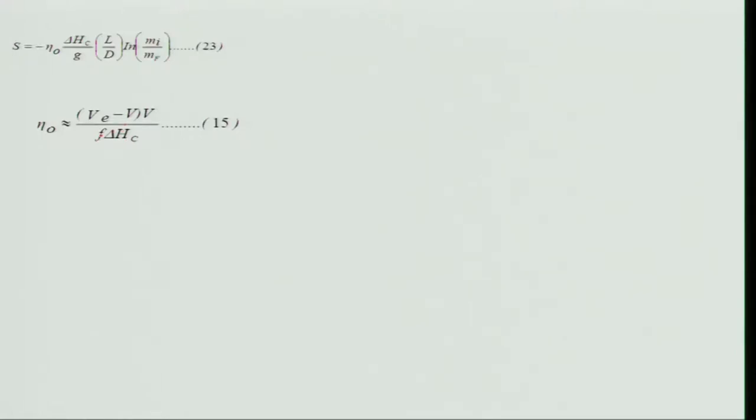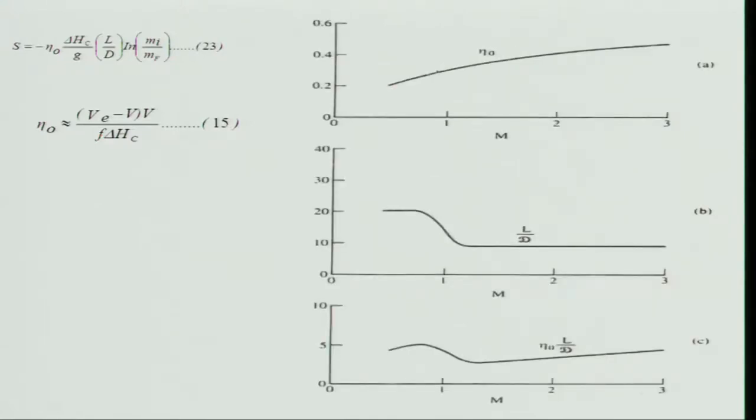Meanwhile, L/D changes with flight Mach number — it remains roughly constant over a range but decreases slowly, especially at supersonic speeds. In supersonic flight (Mach > 1), L/D is very low compared to subsonic flight. If we multiply η₀ · (L/D) and plot it versus Mach number, we find it increases, reaches a maximum around Mach 0.85, then decreases before increasing again.